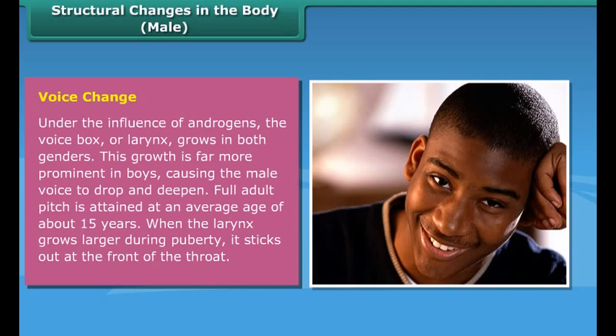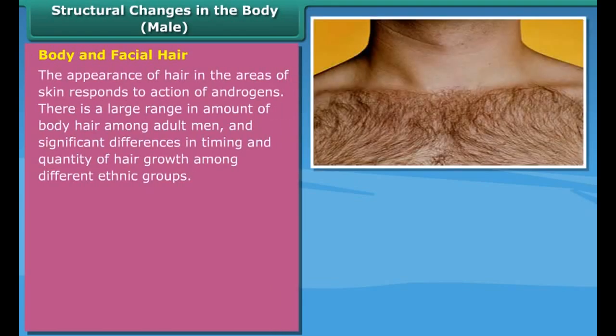Voice change: Under the influence of androgens, the voice box or larynx grows in both genders. This growth is far more prominent in boys, causing the male voice to drop and deepen. Full adult pitch is attained at an average age of about 15 years. When the larynx grows larger during puberty, it sticks out at the front of the throat.